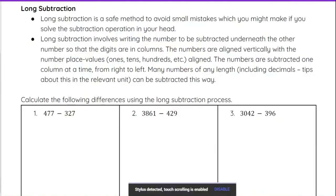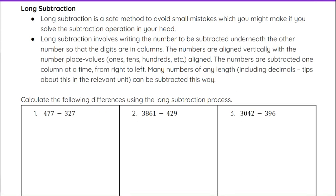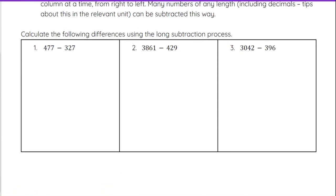So now we are going to look at long subtraction. Long subtraction is a safe method to avoid small mistakes you might make doing subtraction in your head. We take one number and write it on top of the other so that the digits are in columns — specifically the ones digits are lined up vertically, the tens digits, the hundreds digits, and so on, from right to left. Many numbers of any length, including decimals, can be subtracted this way.